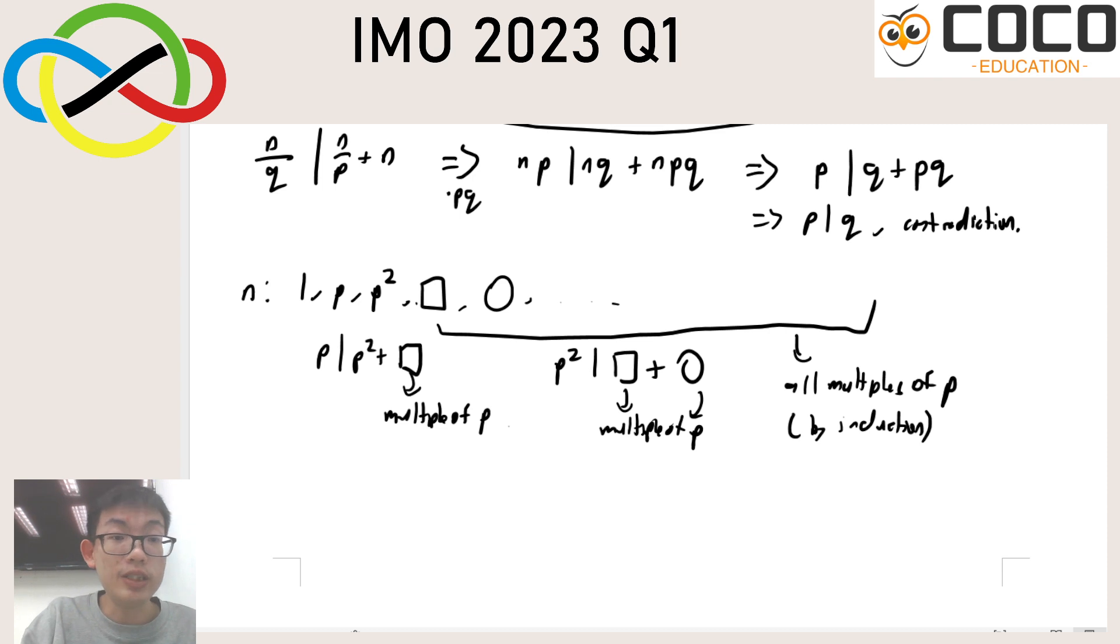If everything is a multiple of p it means that there is no room for q. You cannot fit in another prime number because everything is supposed to be a multiple of p. And so this would imply that only prime powers work.